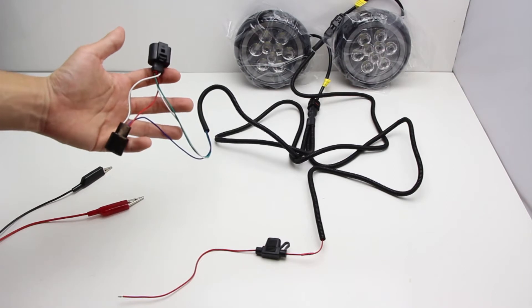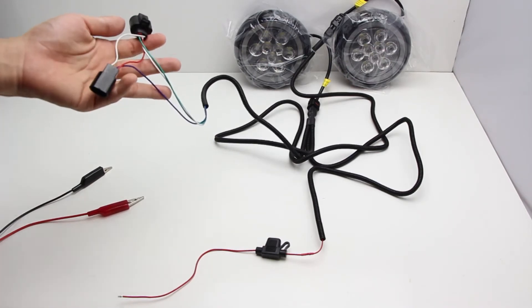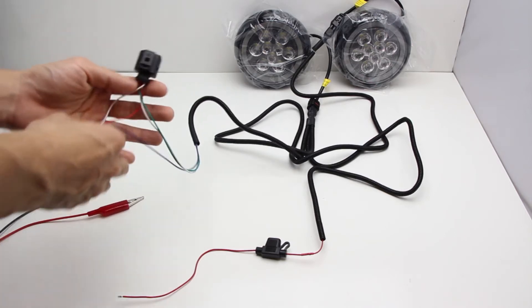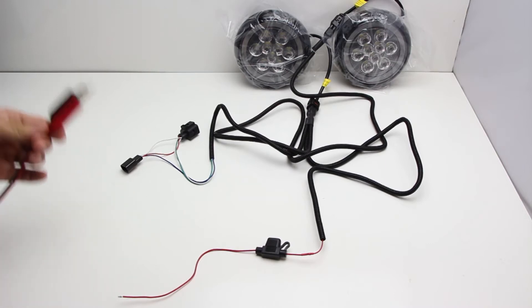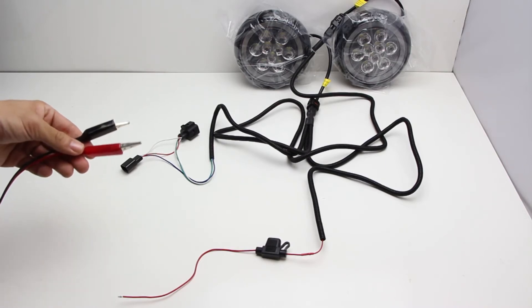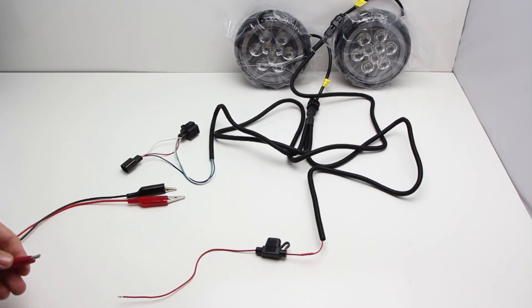You're going to connect the parking light adapters to the stock parking light harness. For this demo we're going to pretend that these two clamps are the stock parking harness which will be connected to the parking light adapter. And this third clamp will be the ACCE 12V power source.